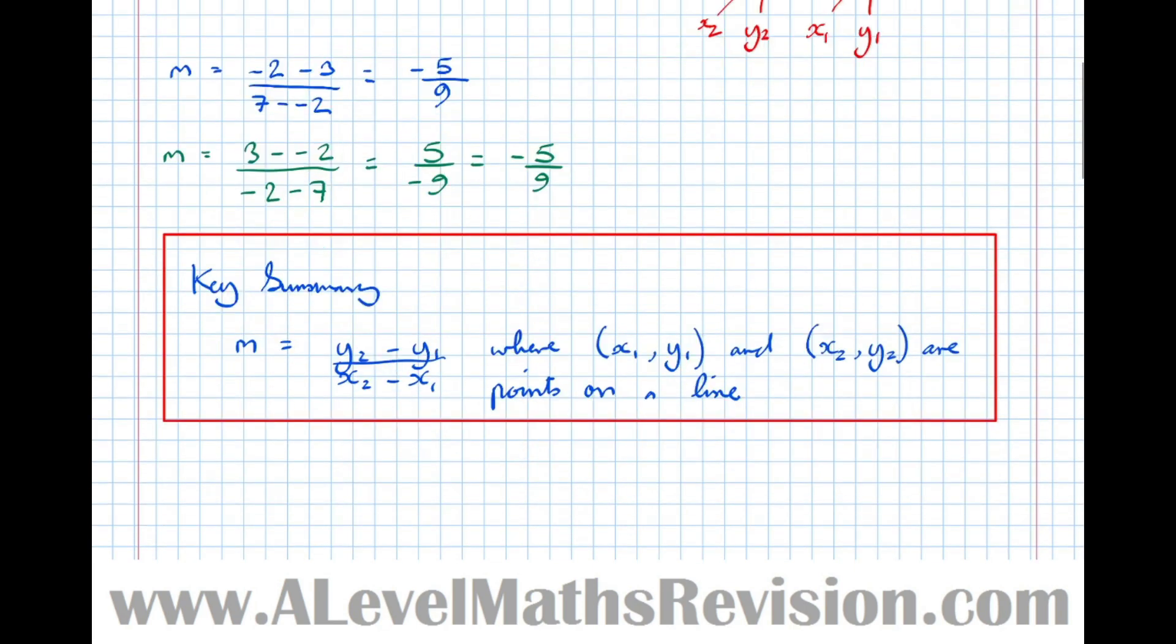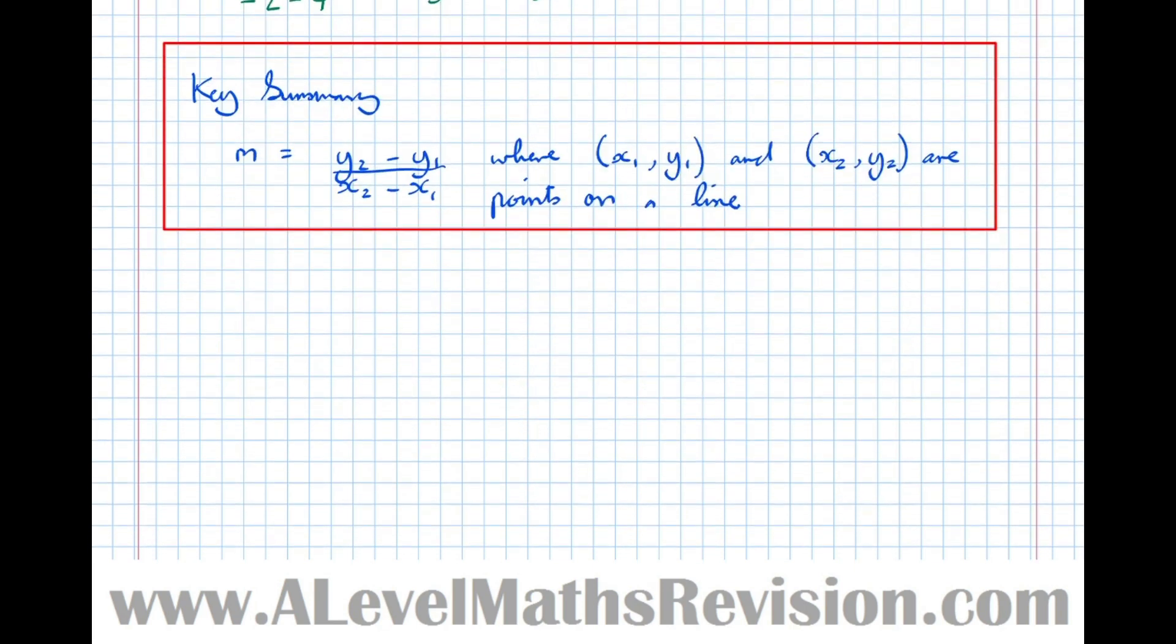As a key summary, the gradient is y2 minus y1 over x2 minus x1, where x1, y1 and x2, y2 are points on the line. That's a key formula you need to remember, and that's the way at A-Level you should present your answers. That's what's expected in all the mark schemes.